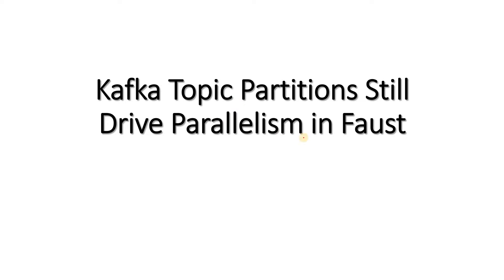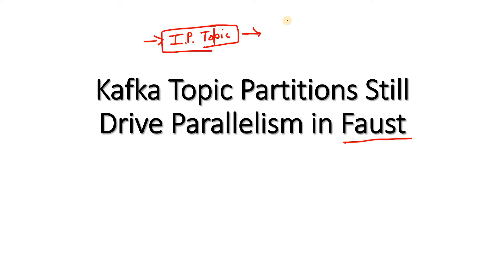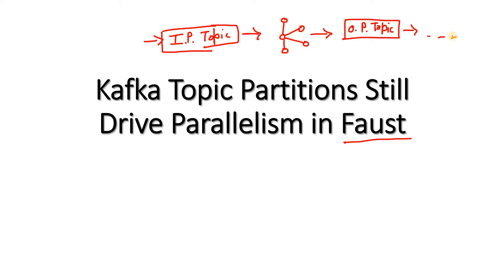Hello friends, welcome to our channel Knowledge Amplifier. In our previous video we started discussion on Faust, which is widely used for Kafka stream processing in Python. As a quick recap: a producer continuously produces data into an input topic, our Faust stream processor consumes that data, applies transformations or curation, and writes the filtered processed data into an output topic, from which consumers write to some external application.